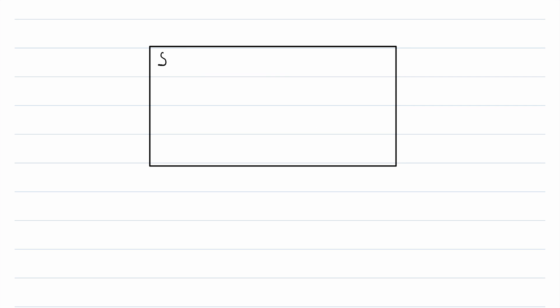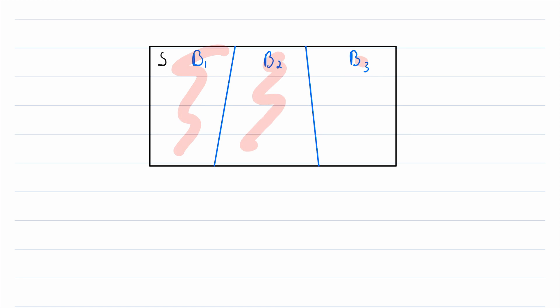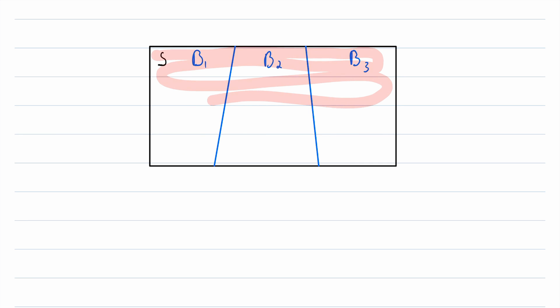Let's suppose this big black box is our sample space, and suppose there are three events that partition this sample space. Let's say the events are B1, B2, and B3. These three events partitioning the sample space means that they are disjoint — so no two events can happen at the same time — and altogether these three events make up the whole sample space.